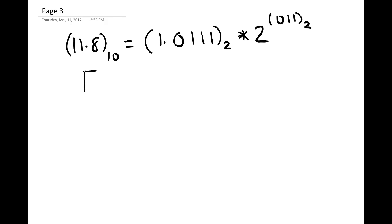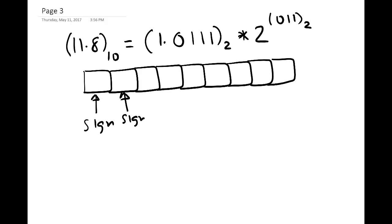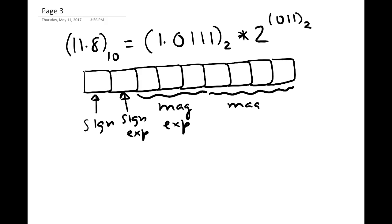Now we assign the values to the 9 bits of this hypothetical floating point. The first bit is for the sign of the number; the second bit is for the sign of the exponent; the next three bits are for the magnitude of the exponent; and the last four bits are for the magnitude of the mantissa. The sign of the number is positive so we put 0. The sign of the exponent is positive so we put 0. The magnitude of the exponent is 011.